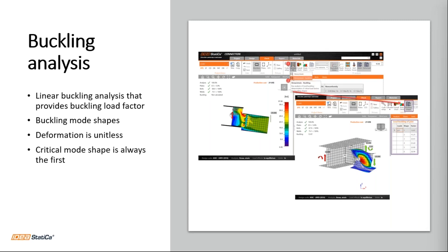IDEA Statica does linear buckling analysis and shows the associated buckling modes. As a result, it provides a buckling load factor — the number by which the applied load must be multiplied to obtain the buckling load magnitude. The buckling mode shapes present the shape the structure assumes when it buckles in a particular mode, but say nothing about the numerical values of displacements or stresses. This is analogous to a modal analysis which calculates natural frequency and provides qualitative information on mode shapes but not actual magnitudes. The deformation has no unit and no magnitude — you just observe the buckling shape for every mode.